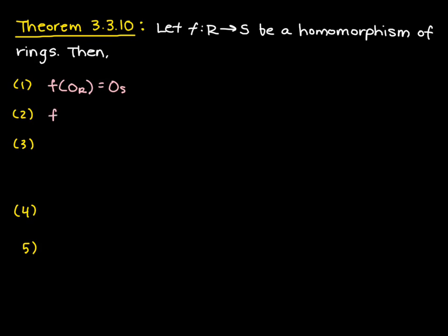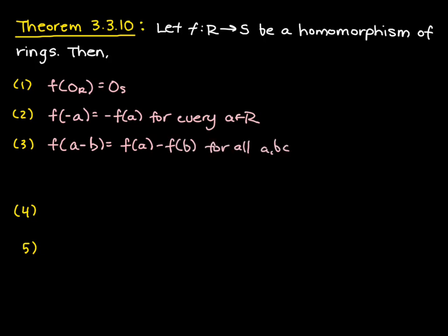The next property is that if we take f of negative A, that's going to be equal to negative f of A for every A in R. If we have f of A minus B, that's going to be equal to f of A minus f of B for all A, B in R.